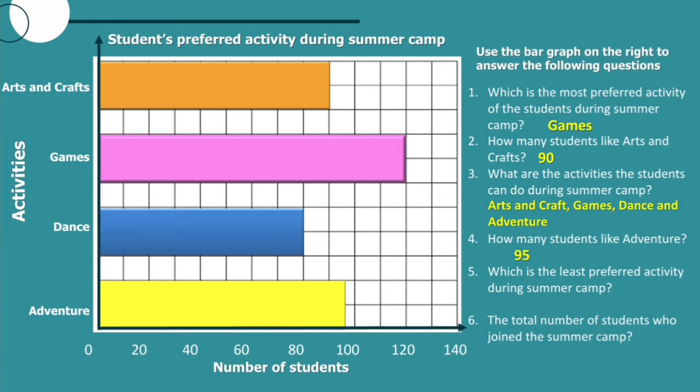Number five: which is the least preferred activity during summer camp? The blue bar is the smallest, which is dance. Number six: the total number of students who joined the summer camp. To get the total, we add all the frequencies of each category: 90 plus 120 plus 80 plus 95 equals 385. So there are 385 students who joined the summer camp.